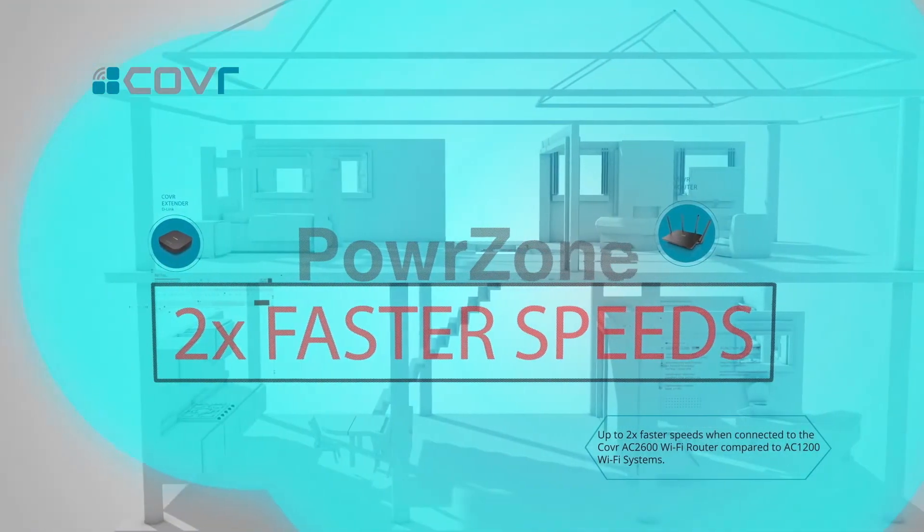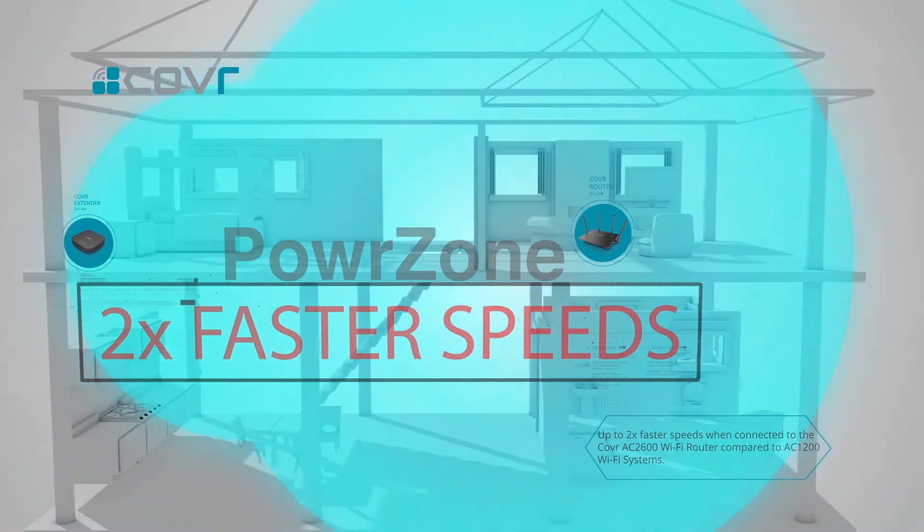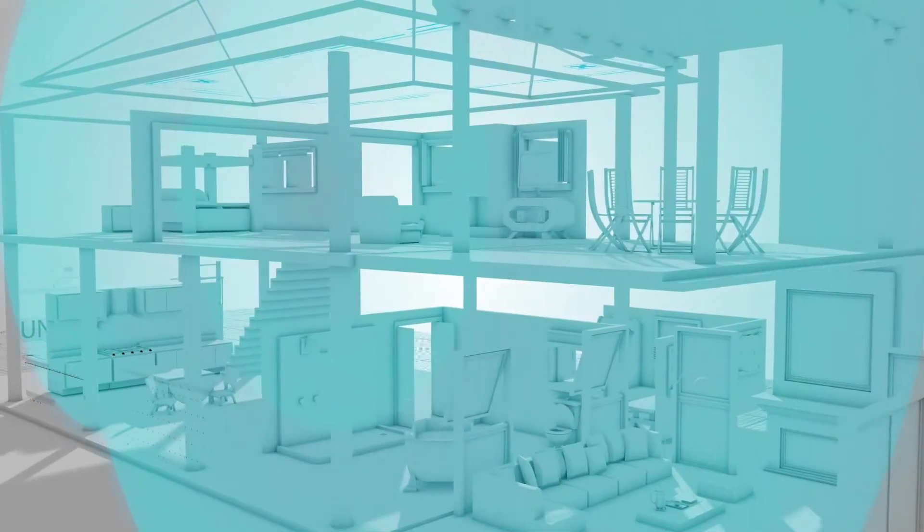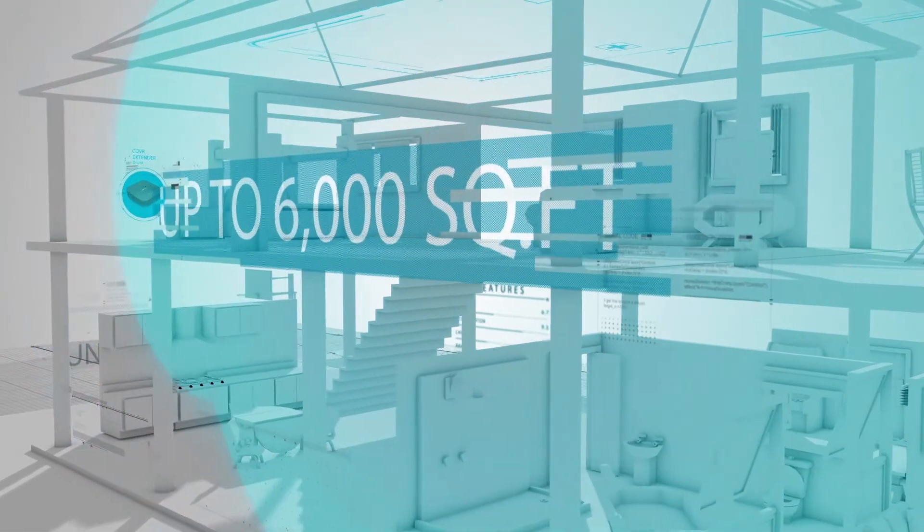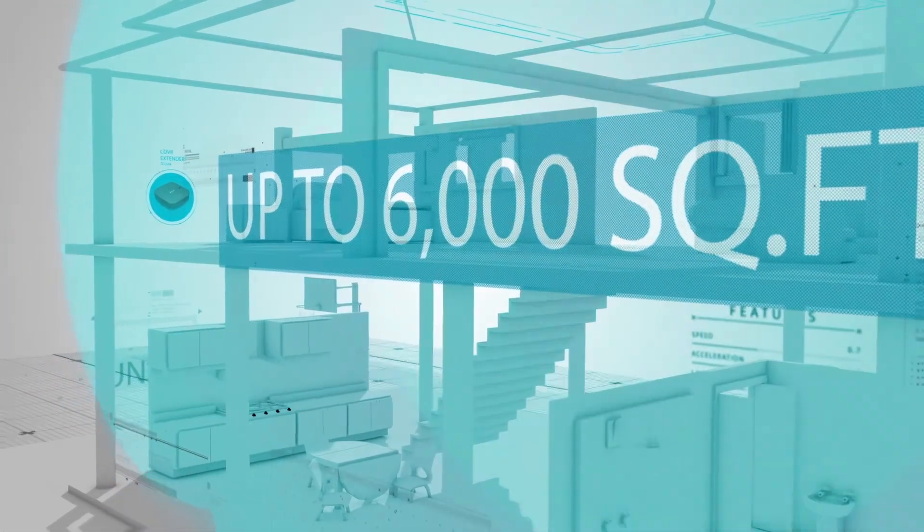A Cover seamless Wi-Fi extender takes care of the outer edge, together giving you up to 6,000 square feet of coverage, all on one network. If you need even more coverage, you can add additional Cover seamless Wi-Fi extenders as you need them.